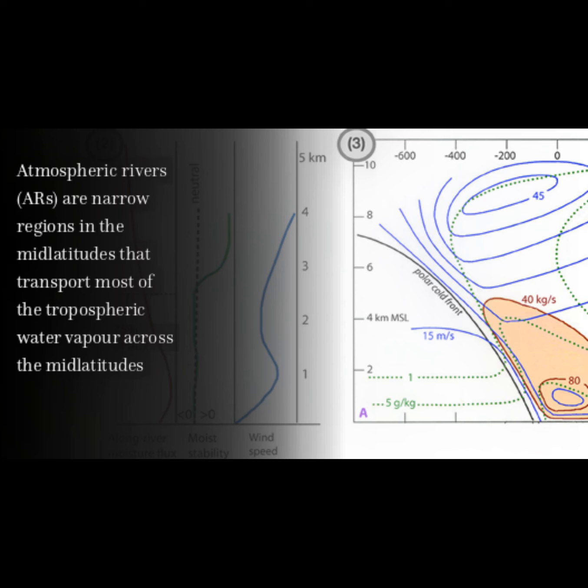Atmospheric rivers, ARs, are narrow regions in the mid-latitudes that transport most of the tropospheric water vapor across the mid-latitudes.